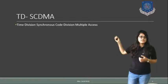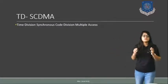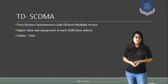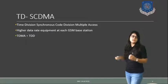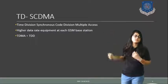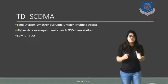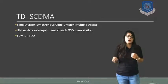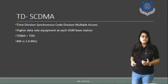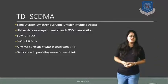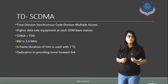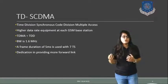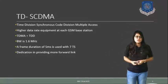For the next standard, TD-CDMA — Time Division Synchronous Code Division Multiple Access — higher data implementation with GSM base stations is possible. The access technique used for TD-CDMA is TDMA combined with TDD duplexing. TDD means transmitting and receiving is possible simultaneously but in terms of time slots. The bandwidth provided is 1.6 MHz. The frame duration is 5 ms with 7 time slots. It also provides dedication in providing more forward-link communication. This is about the third generation wireless communication standards.